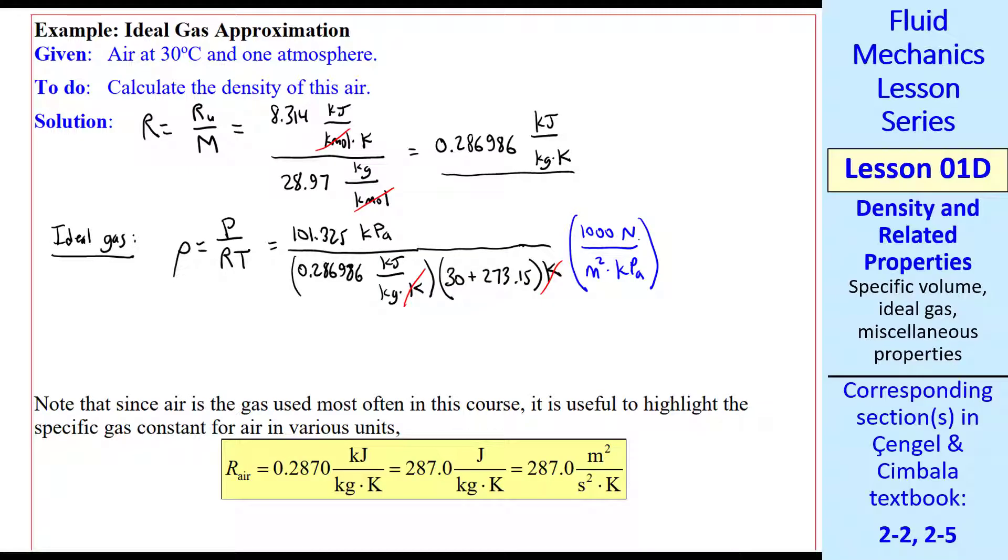I need a couple unity conversion factors. A kilopascal is 1,000 newtons per meter squared. So I write my unity conversion factor this way. And a kilojoule is 1,000 newton meters. So the thousands cancel out. Kilojoules cancel out. KPAs cancel out. And the newtons cancel out. We're left with kilogram on the top and meter cubed on the bottom, which is what we want for density.